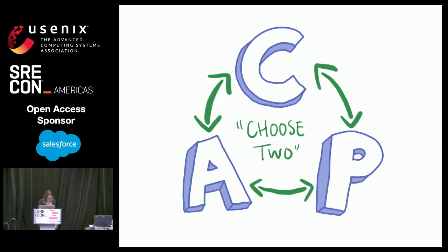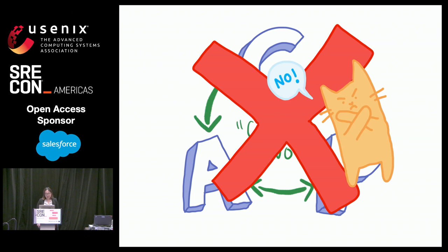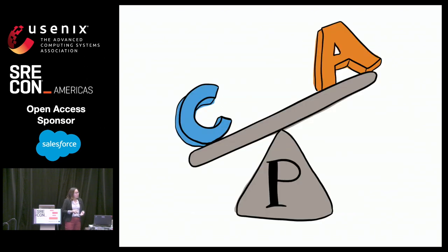Sometimes on the internet, people like to formulate the CAP theorem as: here are three things, you can choose two, just pick any two — implying that you can design a distributed system where you will away one of these things. But that's wrong. That's not possible. You can't design distributed systems this way. Today there are more frameworks than CAP for reasoning about distributed trade-offs.